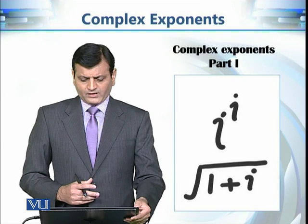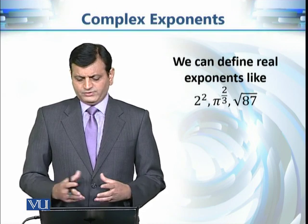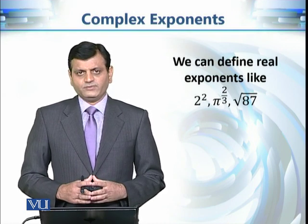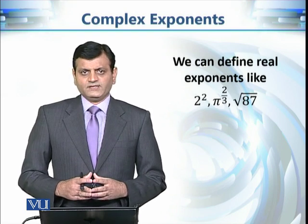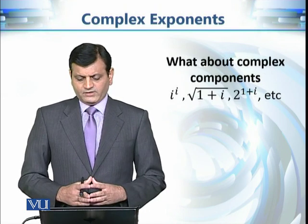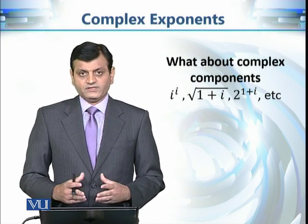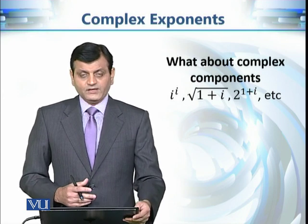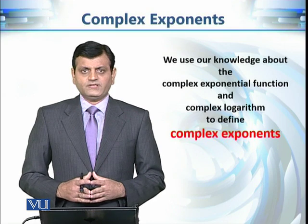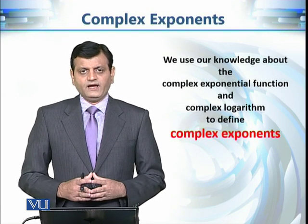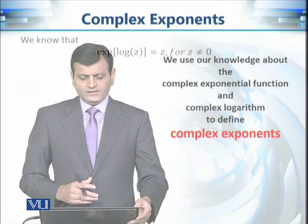Let's explore how we can define these complex exponents — for example, 2 squared, pi raised to power 2/3, square root of 87, and so on. The question is: what happens if the power is a complex number, like iota raised to power iota, square root of 1 plus iota, or 2 raised to power 1 plus iota? The idea is to use our knowledge of the complex exponential function and the complex logarithm function to define complex exponents.